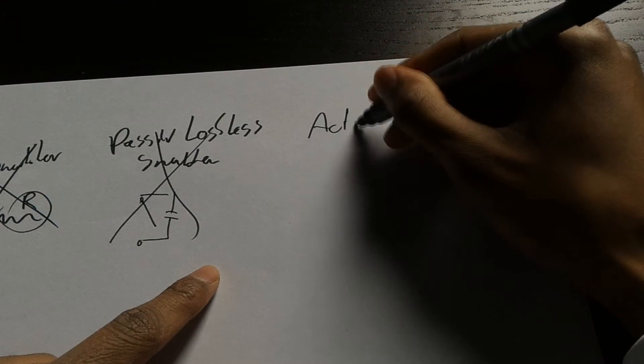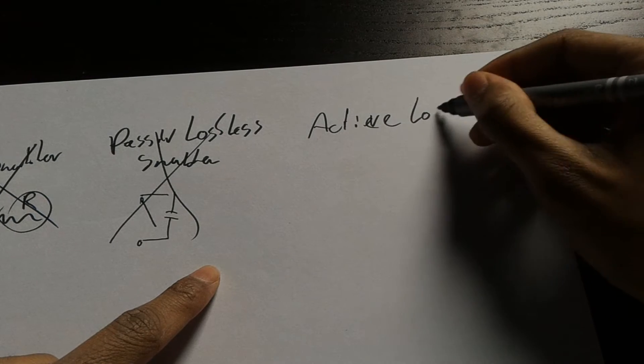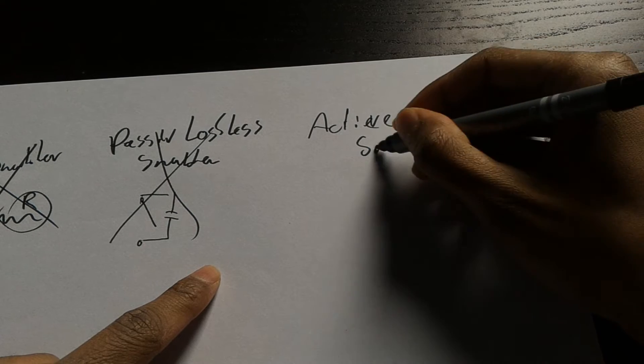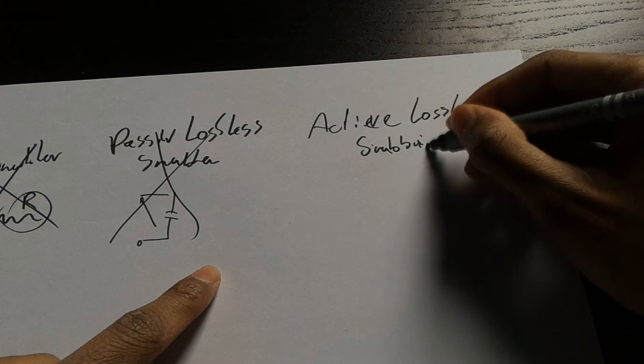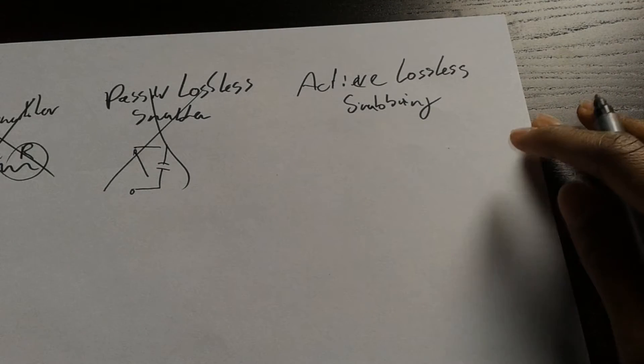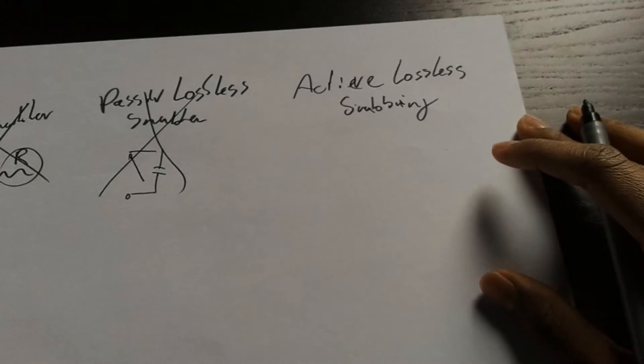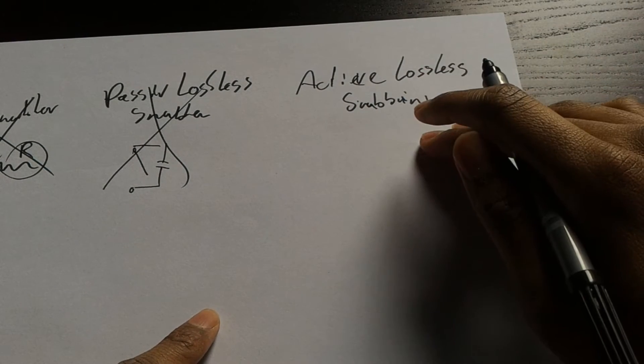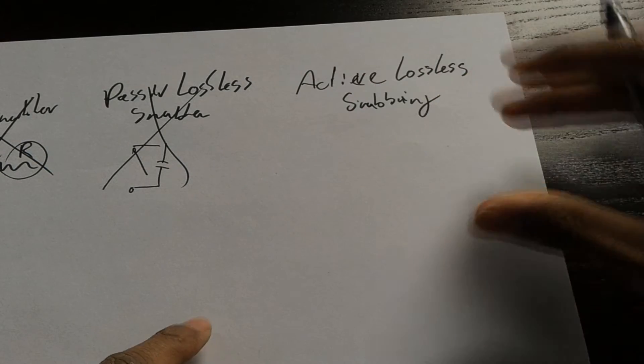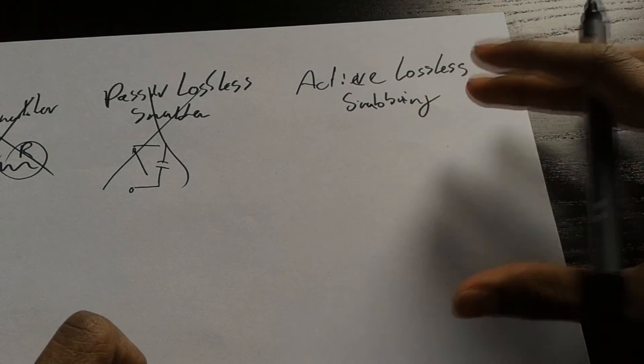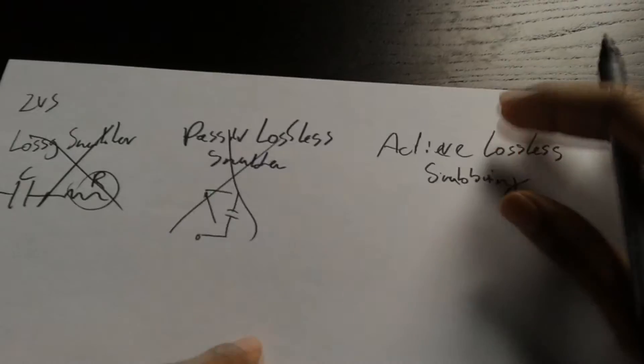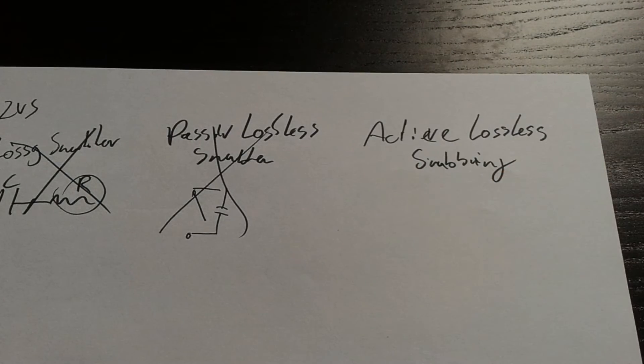What we are going to take a look at is active lossless snubbing, which is going to be a lot harder, but it's going to be pretty effective. What we are going to do in this case is changing every single phase of every single MOSFET to make sure this is accomplished.